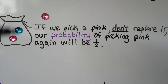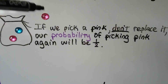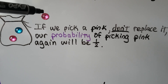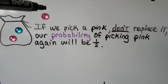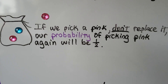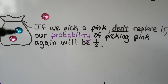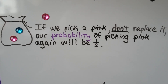So if we pick a pink one out of the bag and we don't replace it — we keep it out — and then we pick again, now the probability of picking pink again will be one-half because there are only two left in the bag. That is dependent upon what we picked the first time.